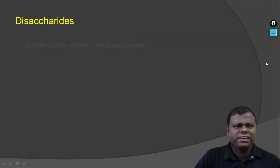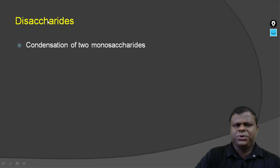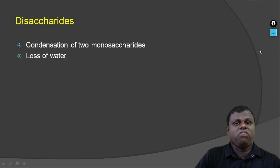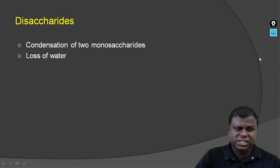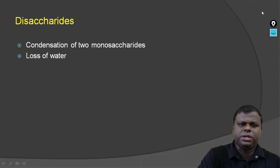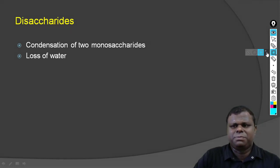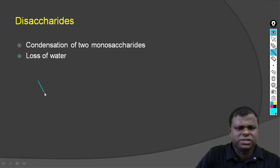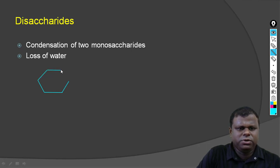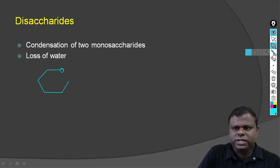Now the first disaccharide we already know is sucrose. It is a combination of two monosaccharides and it is formed as a result of condensation — which means a loss of a water molecule. I'm just going to draw a general structure, considering the pyranose ring only.